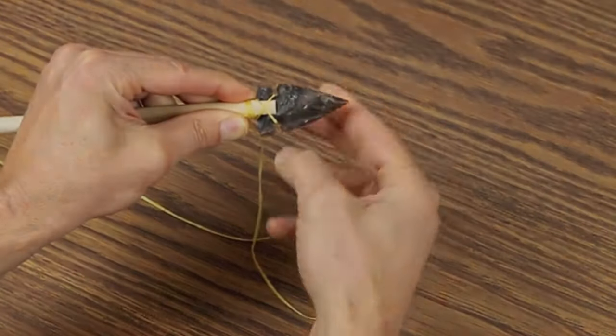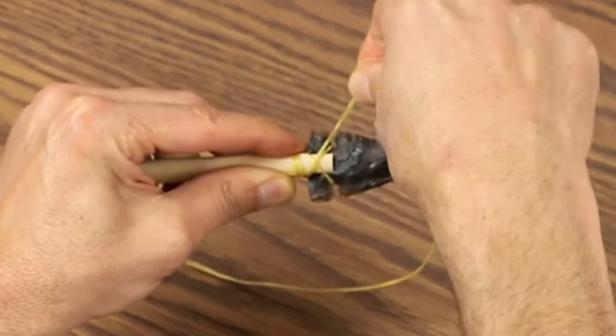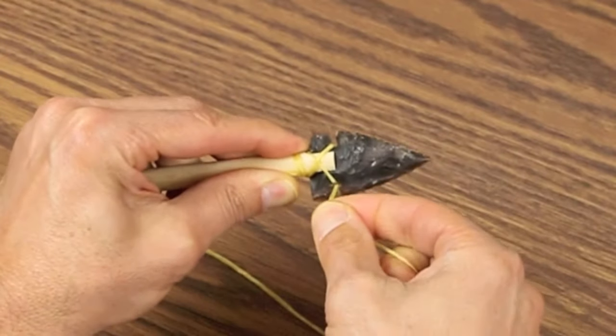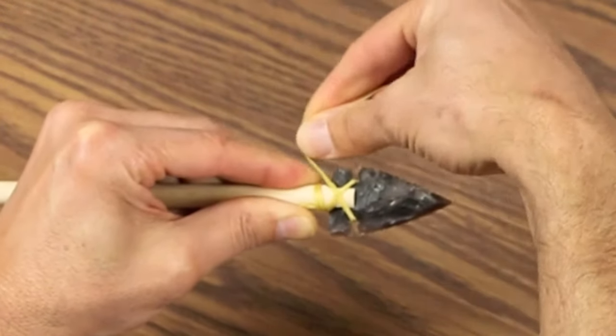Take a look at it, line it up, and again, come around from the back, go through the notches. You're making an X on the front.